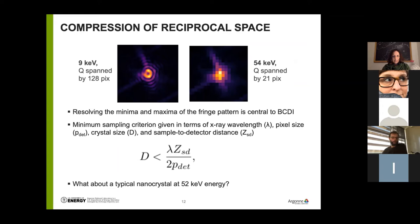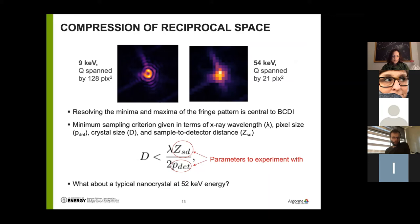The sampling criterion can be written down, and the minimum sampling is dictated by the wavelength of the X-rays, the pixel size of the camera, crystal size, and the sample-to-detector distance — essentially the Shannon sampling criteria. We've taken this inequality and designed two kinds of experiments around it. The sample-to-detector distance and the pixel size are two parameters we can play around with to see if we can create conditions where BCDI can work at high energies. We'll show results at 52 keV using typical nanocrystal sizes in the 400 to 500 nanometer range using the high energy beamline at sector one — the HEDM beamline at APS.